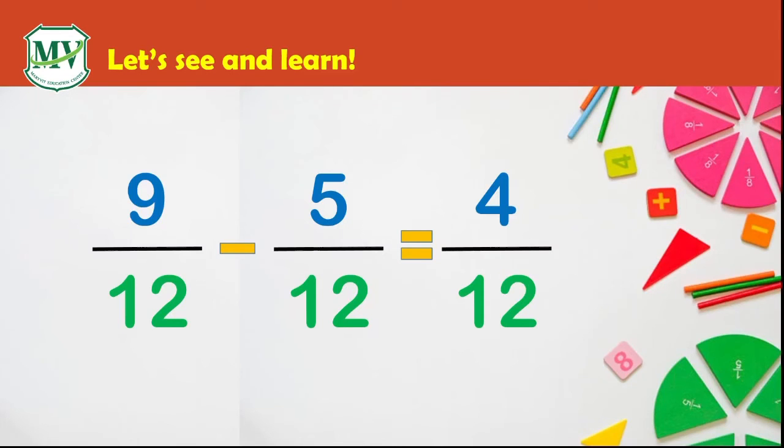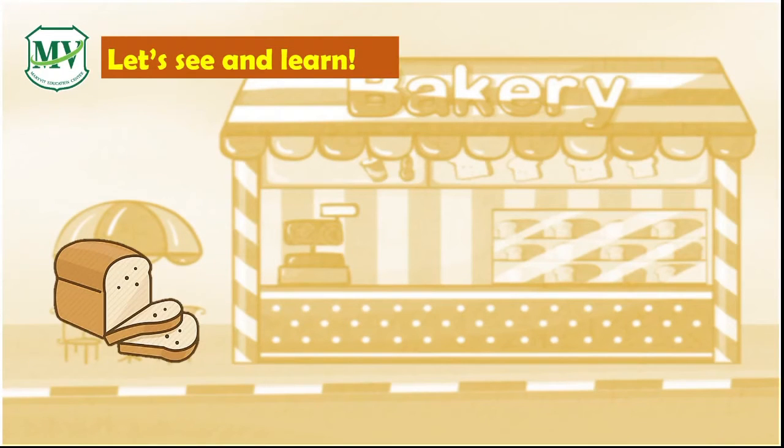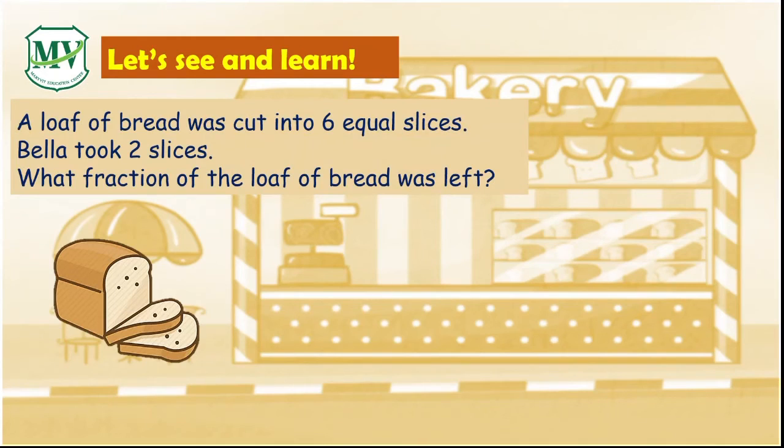Are you up for more? Here we go. In a bakery shop, a loaf of bread was cut into 6 slices. Bella took 2 slices. What fraction of the loaf of bread was left? To find out, we need to subtract the fractions: 6 over 6 minus 2 sixths.